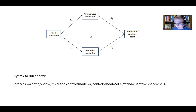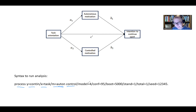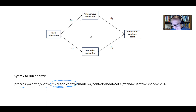The last model is a parallel mediation. The syntax again uses process with Y, X, and M. Because we have two mediators in this analysis, the M option is set equal to the names of both mediators — auton and control. Everything else after that is exactly the same. If we had covariates to include, we would add forward slash COV equals the covariate names. The key difference between this model and the first simple mediation model is that M now contains the names of both mediators.